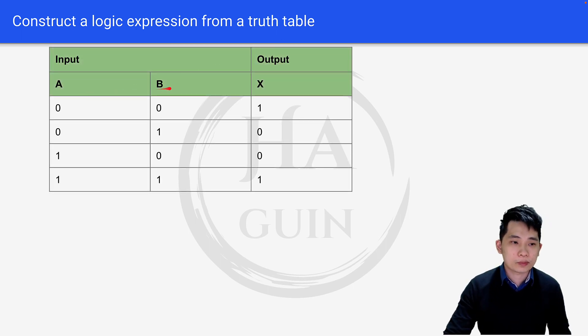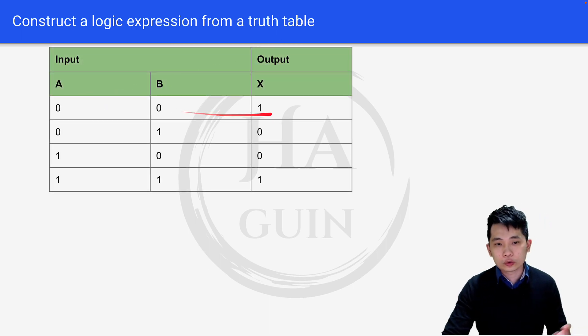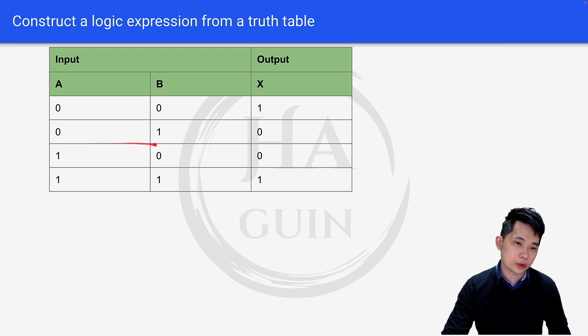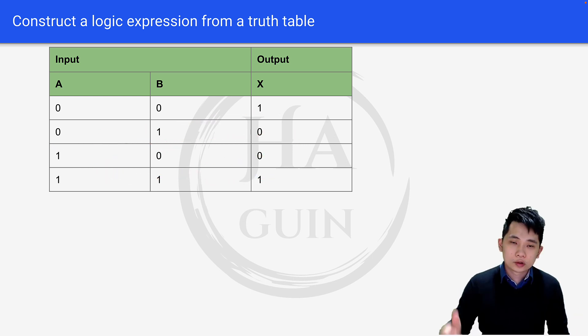We have inputs a and b. When a equals 0 and b equals 0, you get output 1. When a equals 0 and b equals 1, you get 0. When a equals 1 and b equals 0, you get 0. And when a equals 1 and b equals 1, you get 1.